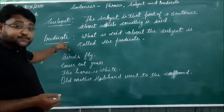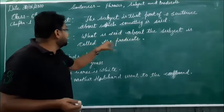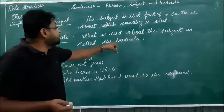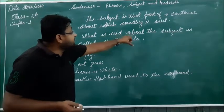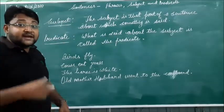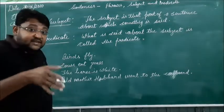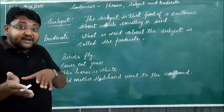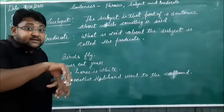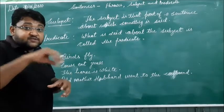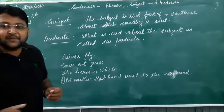And what is the predicate? What is said about the subject is called the predicate. The predicate is that part of the sentence which is saying something about the subject. That part which says something about the subject is the predicate.